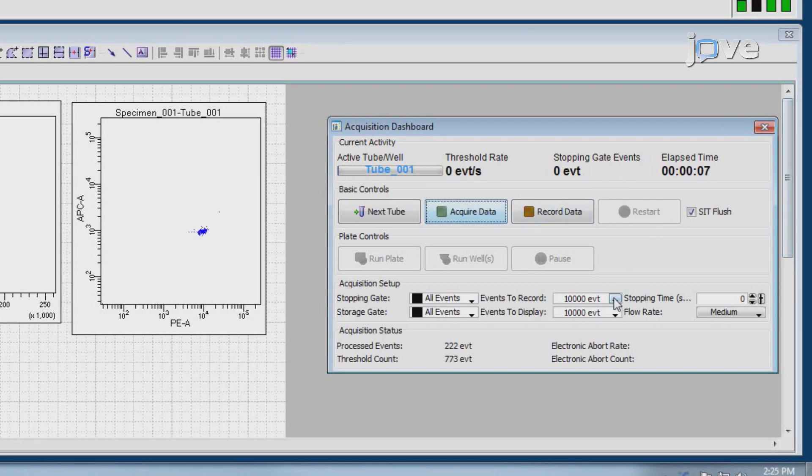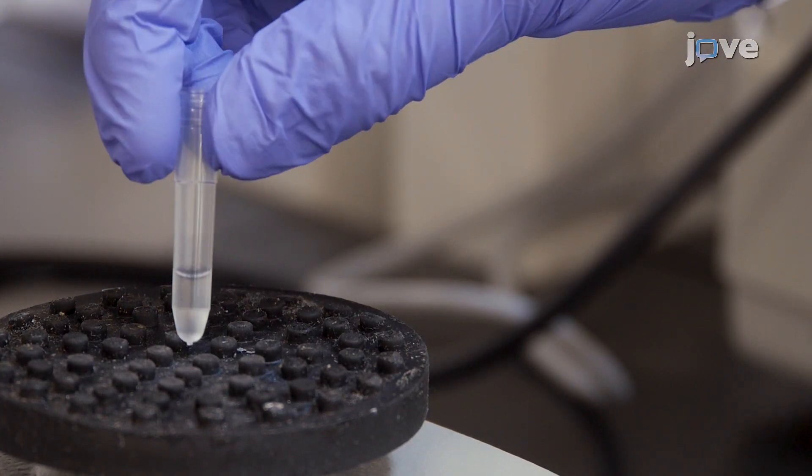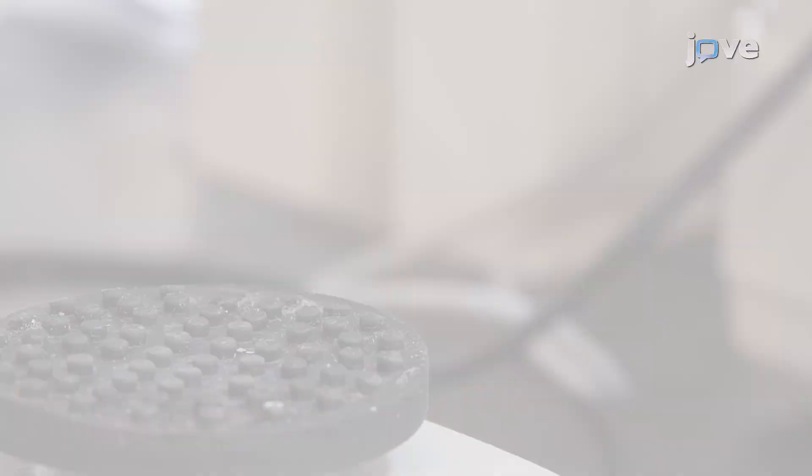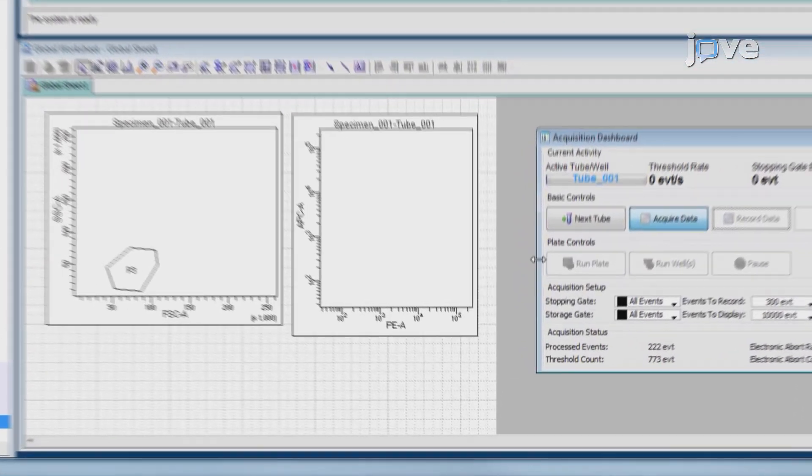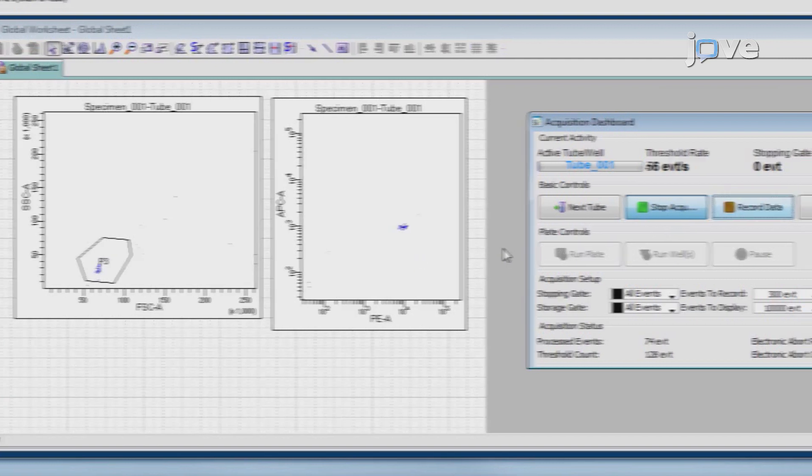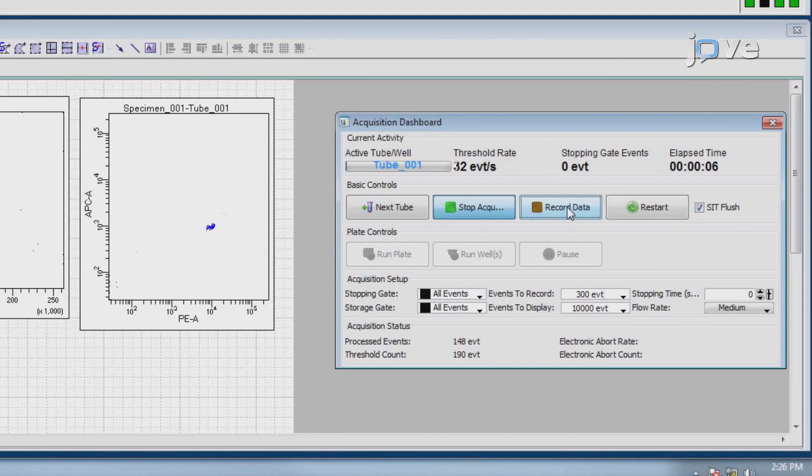To perform data acquisition, set the number of bead events to be acquired to about 300 per analyte. Vortex each sample for 5 seconds before analysis. Then read the samples. When reading the samples, set the flow cytometer to setup mode first and wait until the bead population is stabilized before switching to acquisition mode.